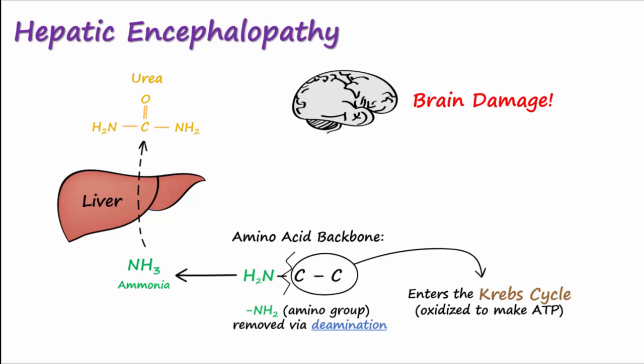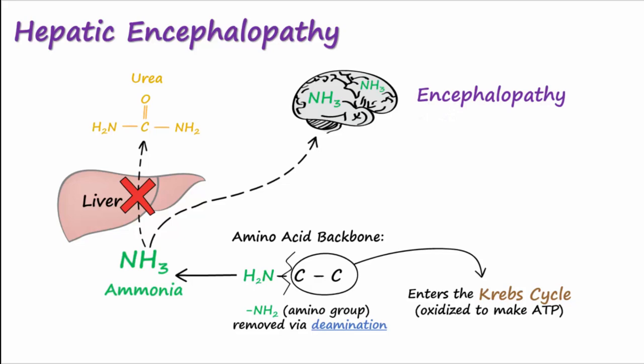When the liver becomes damaged, it no longer converts ammonia into urea, so ammonia levels in the body and brain begin to rise. The brain is particularly sensitive to the effects of ammonia, and elevated ammonia levels can lead to brain damage — a condition known as encephalopathy.